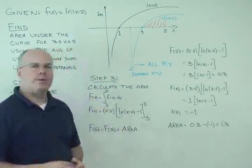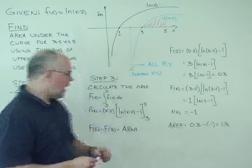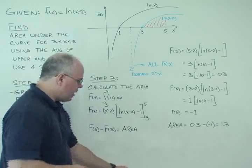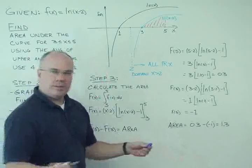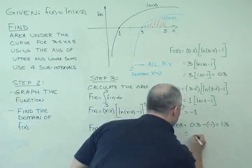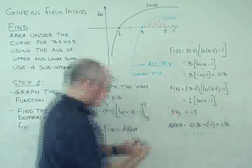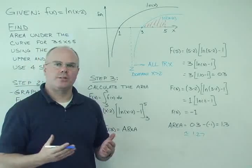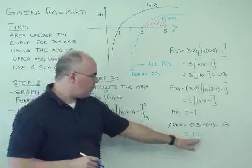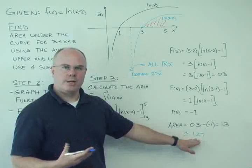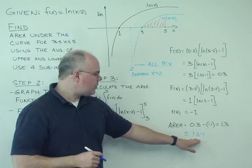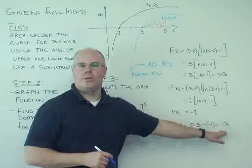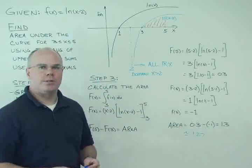Now in a previous segment, we looked at a Riemann sum, and we found for the Riemann sum that this area was approximately equal to 1.27. And so we get good correlation here because we know a Riemann sum is an approximation. So 1.27 for a four-segment or four-interval sum is pretty close to 1.3, and we can be pretty satisfied with these results.